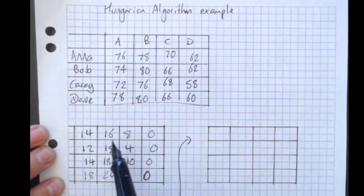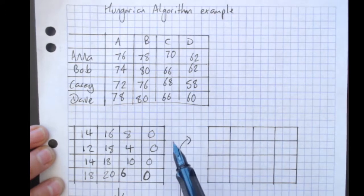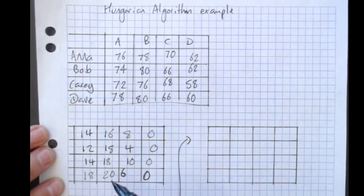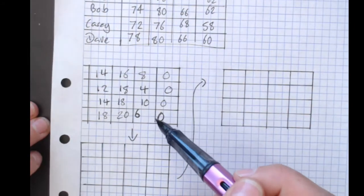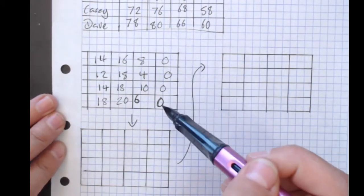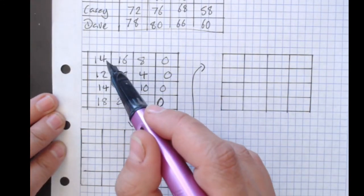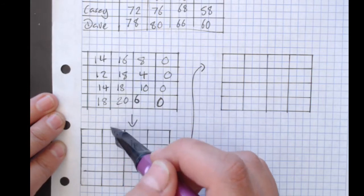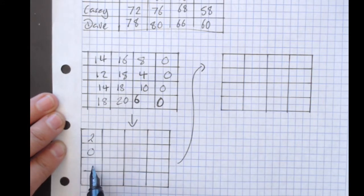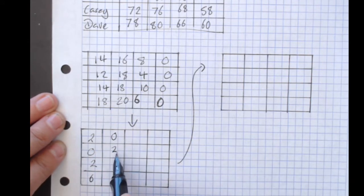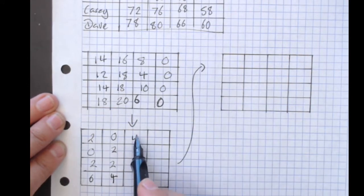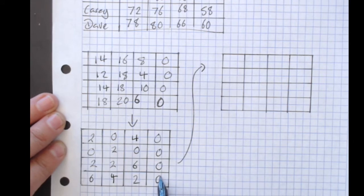So having done that, subtracted the lowest thing in every row from each row, I subtract the lowest thing in each column from each column. So this one doesn't need anything changed, because zero minus zero is zero. If there's a zero in it, you don't need to worry. But this one here, lowest thing is 12, taking away 12 from everything here. Lowest one here is 16, taking away 16 from everything here. Lowest one is four. And those stay as zeros.